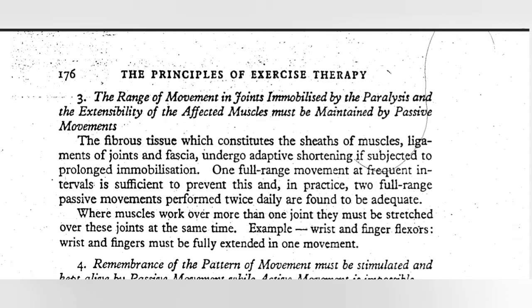In practice, two full ranges of passive movements performed twice is sufficient to prevent shortening. When a muscle works over more than one joint, it must be stretched over that joint at the same time. For example, the two-joint muscles are the wrist and finger flexors — the wrist and fingers must be fully extended at one moment.